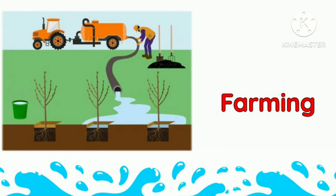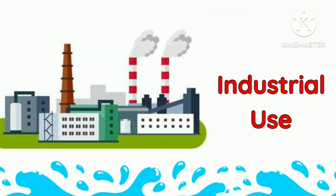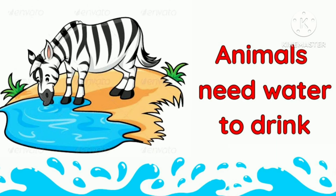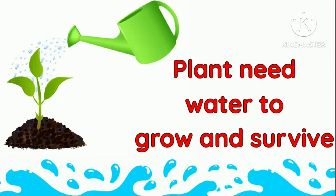Apart from domestic purposes, water is used for farming and for industrial purposes as well. Animals need water to survive, and plants need water to grow and survive.